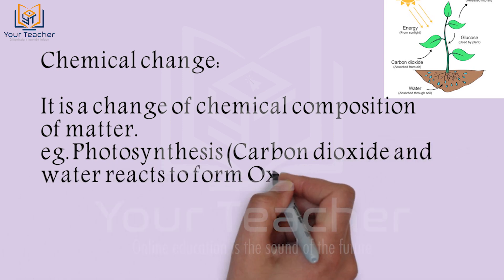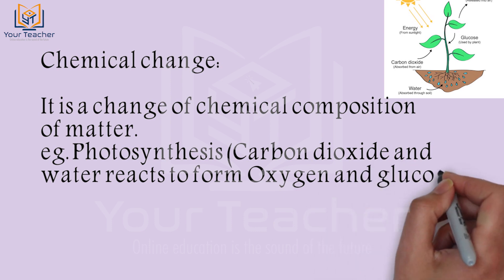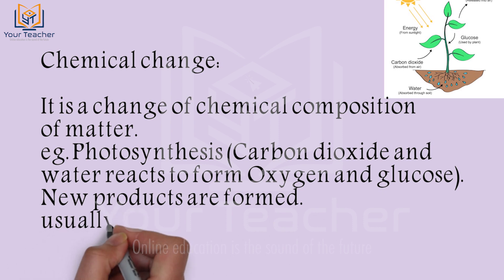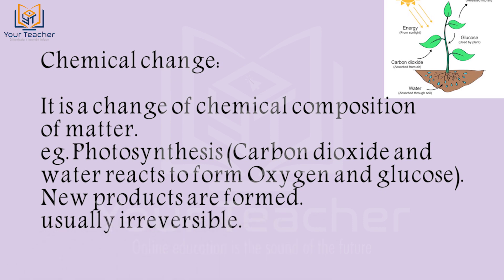In photosynthesis, carbon dioxide reacts with water. Oxygen and glucose are formed. The chemical composition of the reactants changes, producing new substances — this is called a chemical change.